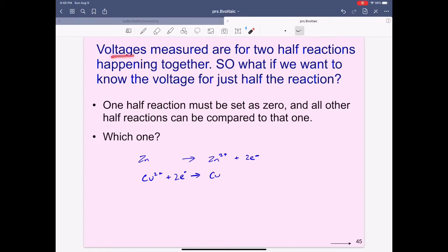Voltages are measured for two half-reactions happening at the same time. So what if we want to know the voltage for just half of the reaction, either the oxidation or the reduction?